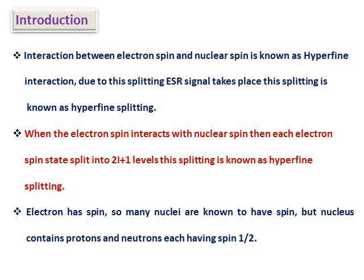As we know, an electron has a spin of plus or minus 1/2. Many nuclei are known to have a spin as well, but a nucleus contains protons and neutrons each having a spin of 1/2. Therefore, it is very difficult to predict the spin of a nucleus, so there are some rules to determine the nuclear spin quantum number.